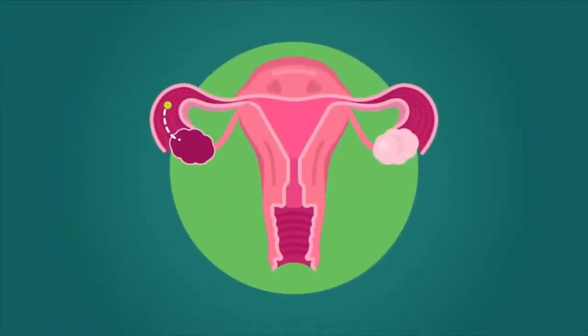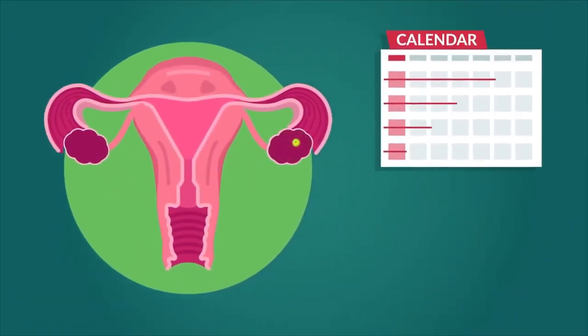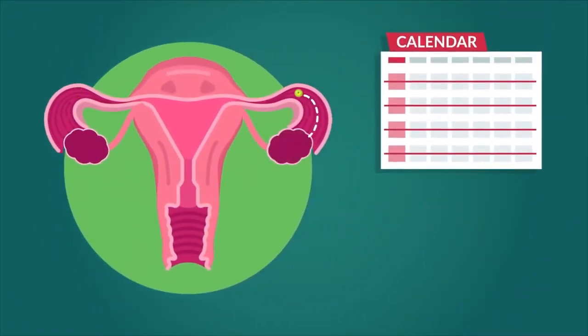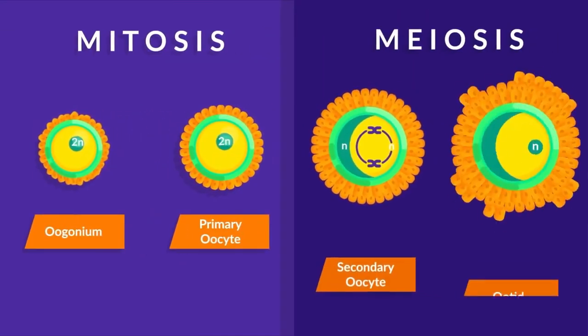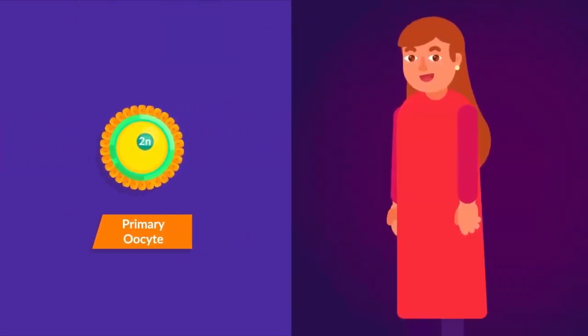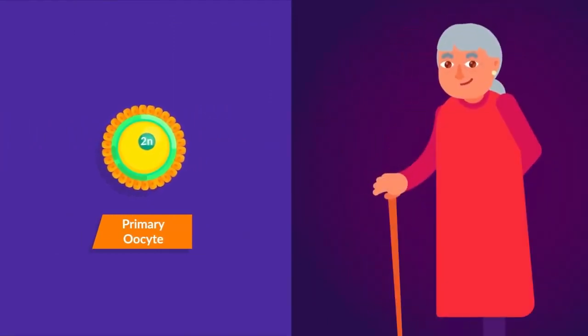Usually, only one egg is released every month. The ovaries take turns to release an egg. The egg cells divide through mitosis and then go through meiosis. Most of these cells are arrested at prophase 1 and may remain like this for up to 50 years.